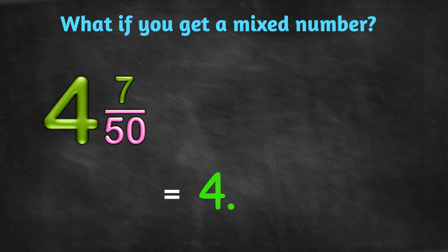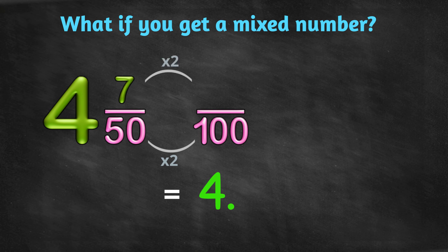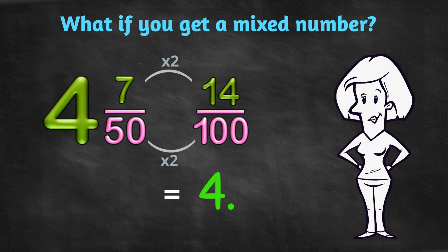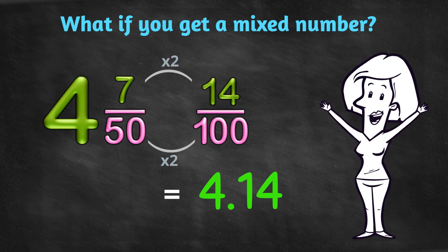To turn 50 into 100, you multiply by 2. So, same up top. 7 times 2 is 14. 14 hundredths. Then the numerator is just your decimal fraction. Easy! You've got the idea!